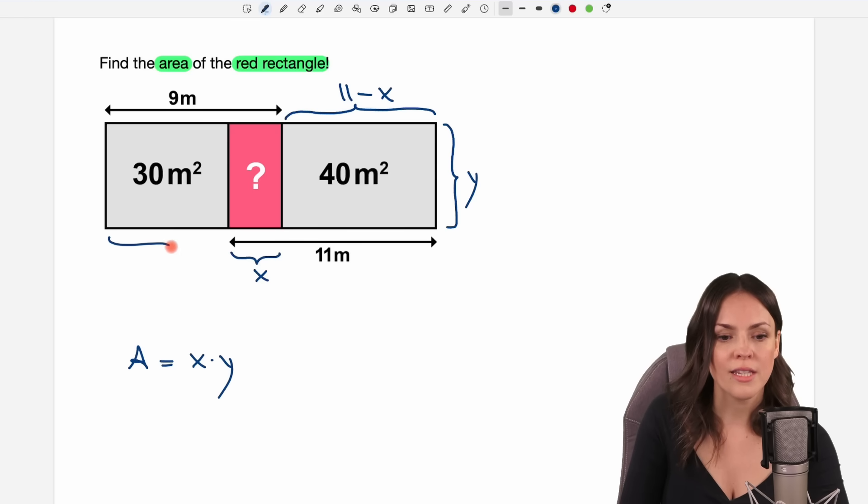And the same with this rectangle here as well. If we want to know the length of this side we can take the 9 meters which would be too long and then just subtract this length here which is x again. So this time we have 9 minus x.